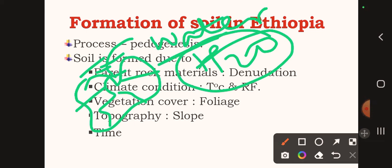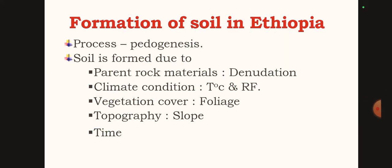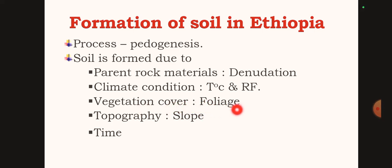Frost action is a key weathering process. Vegetation also contributes — roots blend into the soil and vegetation produces organic acids that help break down rock material into soil.